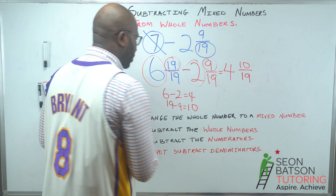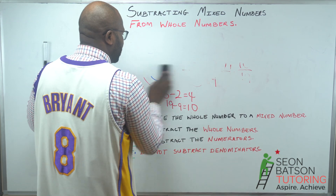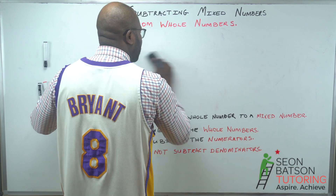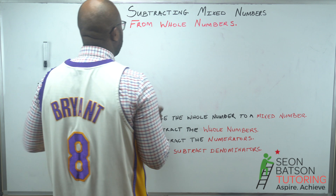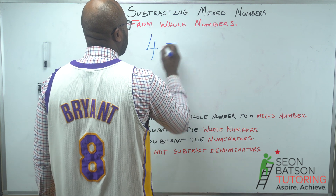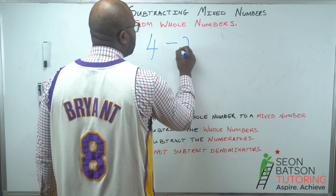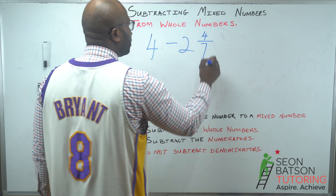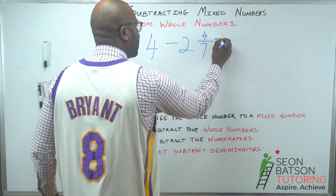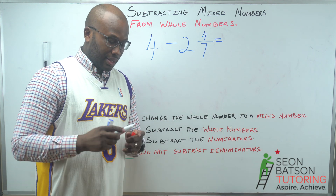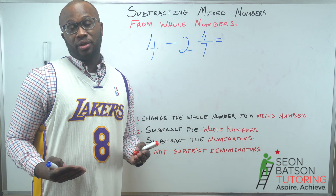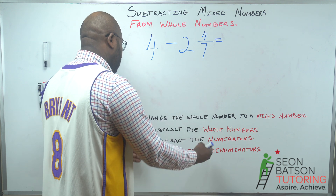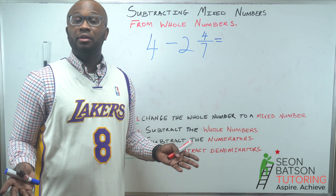Now it's your turn to try one! Let's do 4 take 2 and four over seven. Pause the video, give it a try, and then come back and see if we get the same answer. Remember: step by step — first change your whole number to a mixed number, then subtract the whole numbers, then subtract the numerators. You don't subtract the denominators.